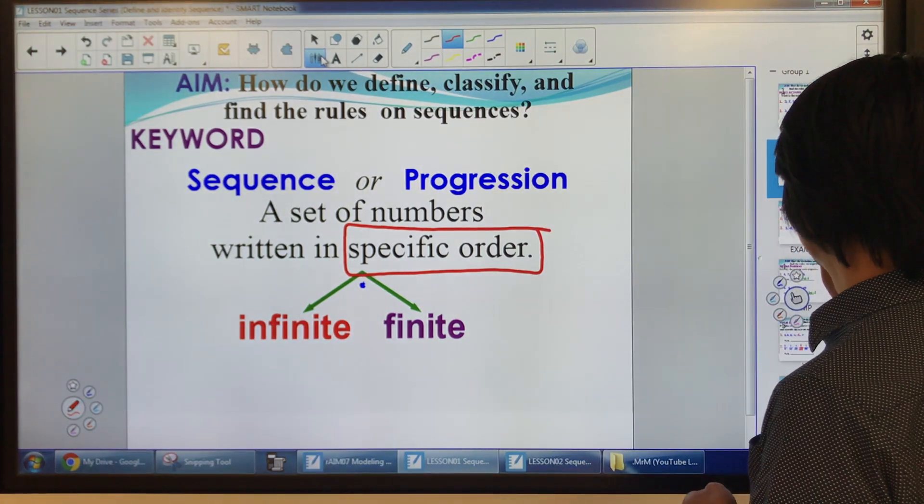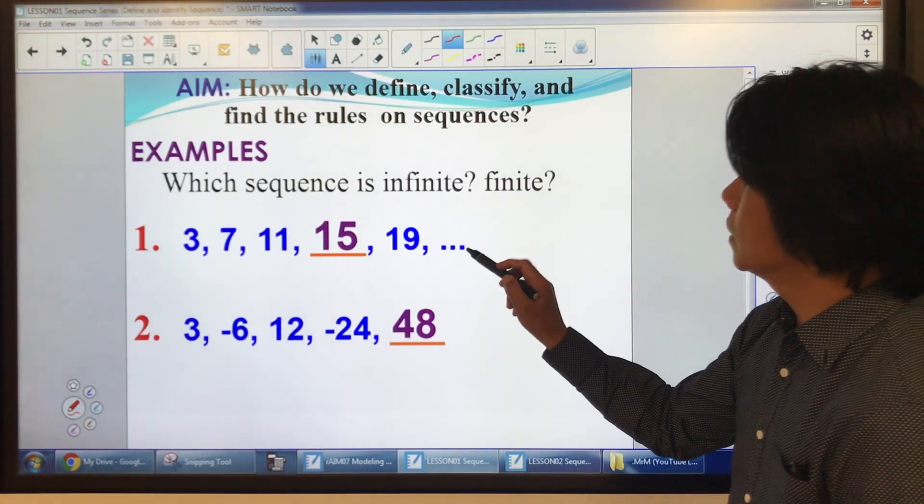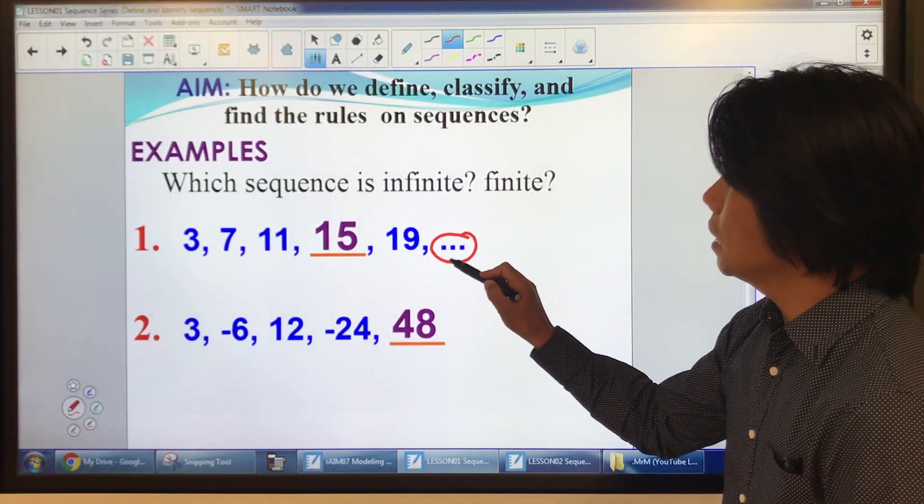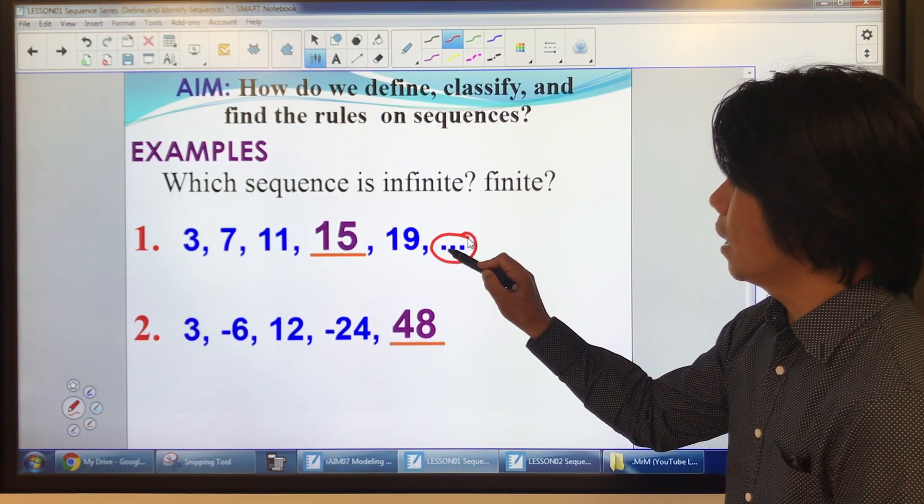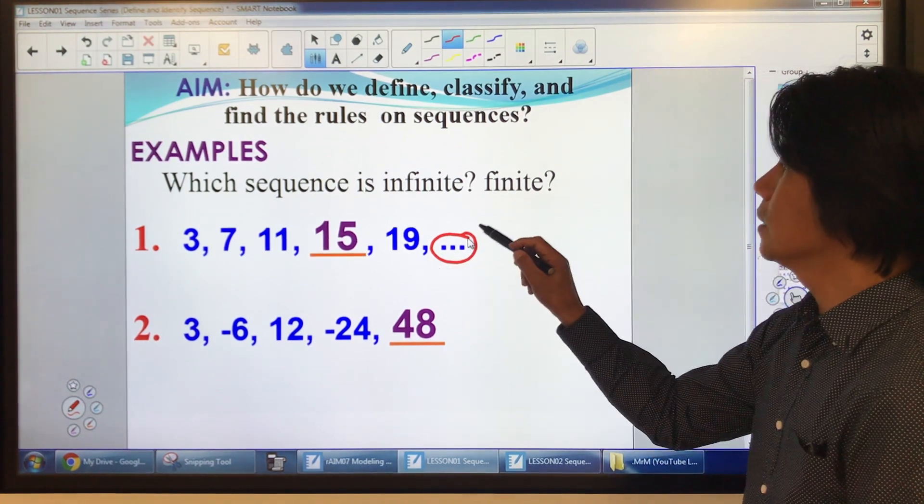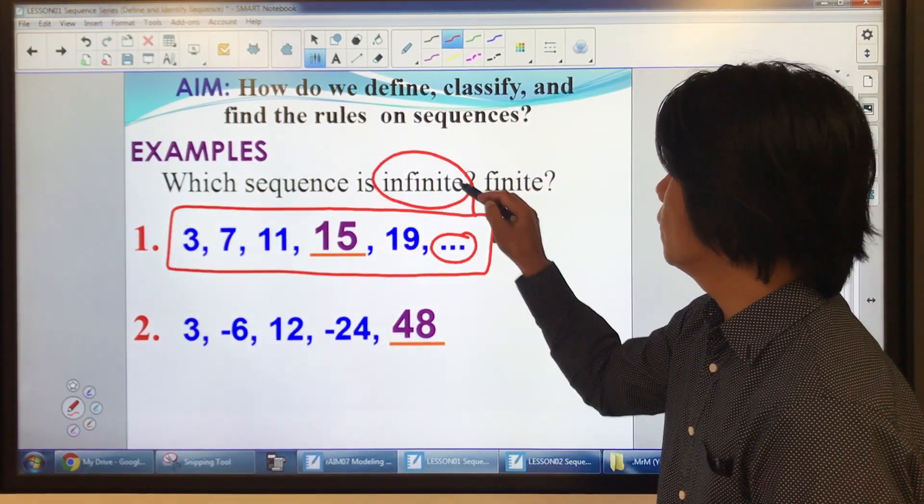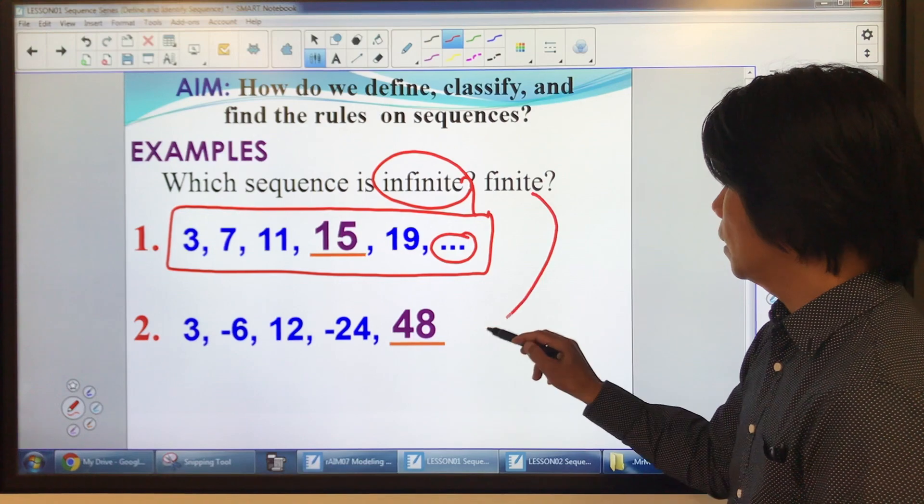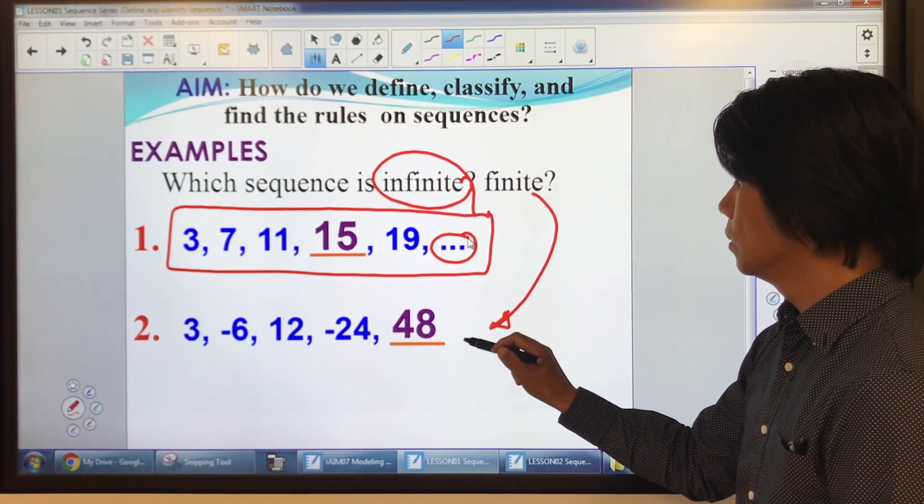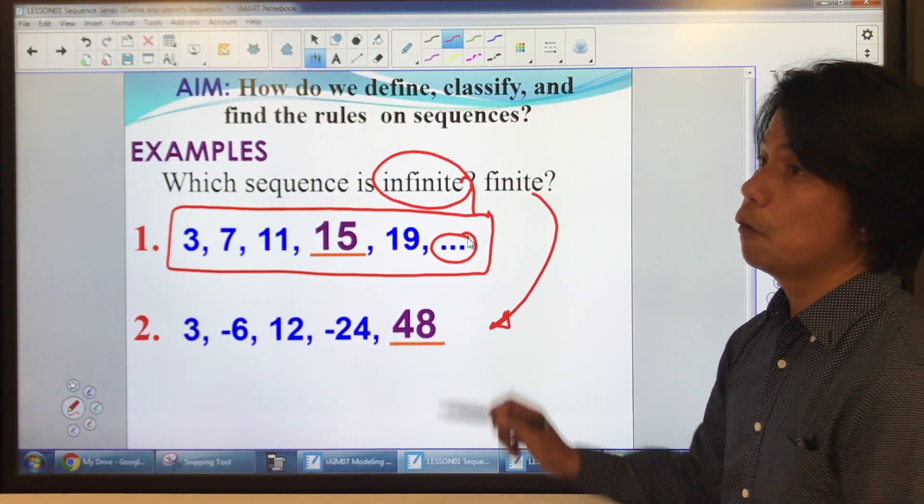Let's have an example. You see these three dots? That means it keeps on going. So and so on. So therefore, this sequence is infinite and the other one is finite. As you can see, there's no three dots after 48.